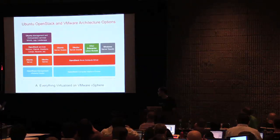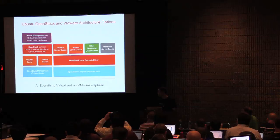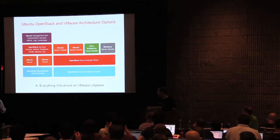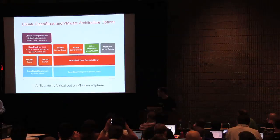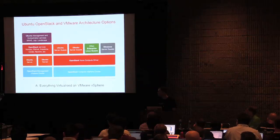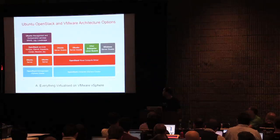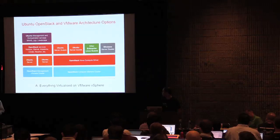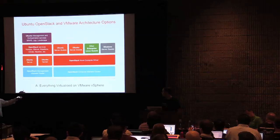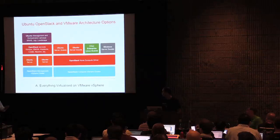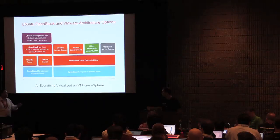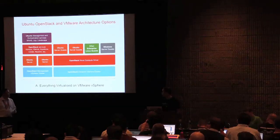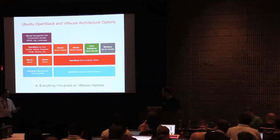The first option is basically everything virtualized on VMware vSphere. For organizations already incredibly familiar with VMware that want to get a taste of OpenStack, this is the recommended way. You've got a VMware vSphere management cluster, Ubuntu Server OS on top of that, all the OpenStack services, and then a separate vSphere cluster talking through the OpenStack Nova compute driver. On top of that, you can run Ubuntu server guests, other Enterprise Linux guests, or even Windows Server guests. Option B is running your OpenStack services on physical servers, with Ubuntu on top, all talking to a VMware vSphere environment.